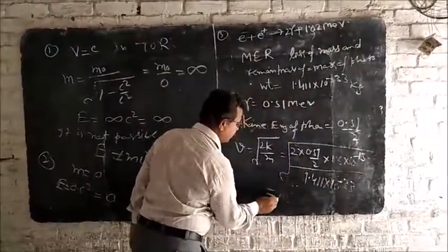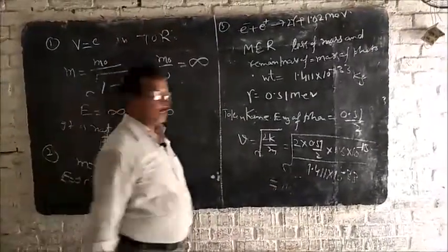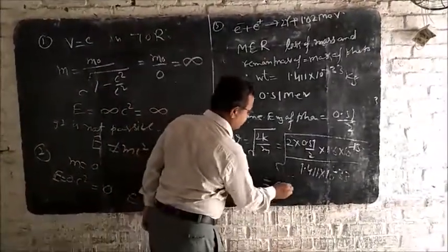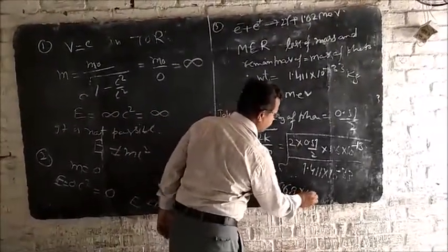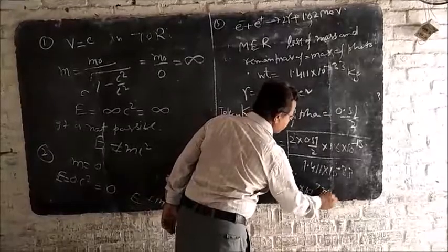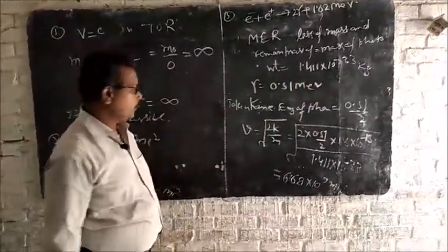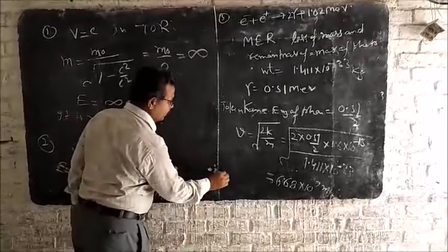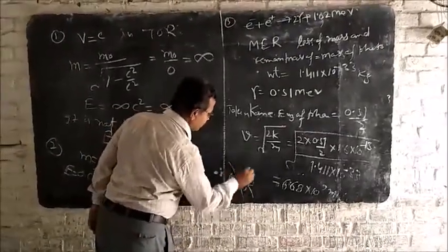We get velocity of photon 6.68 into 10 to the power 9 meter per second. And it is also impossible. Due to this, the mass-energy relation is not correct.